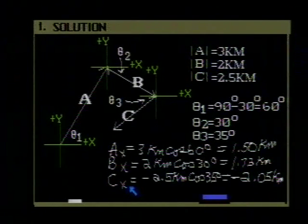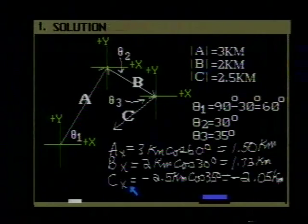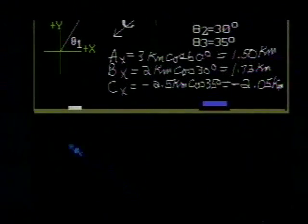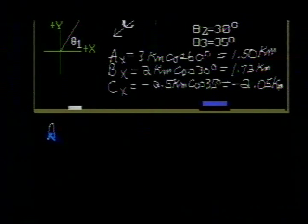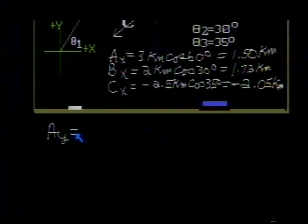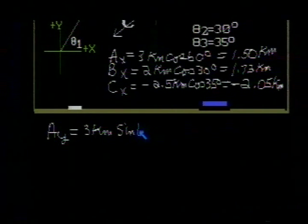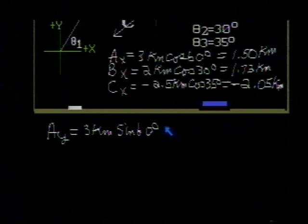Let's do the same thing for the y components. A sub y, the magnitude of A, 3 kilometers, multiplied by the sine of 60 degrees. That turns out to be 2.60 kilometers.